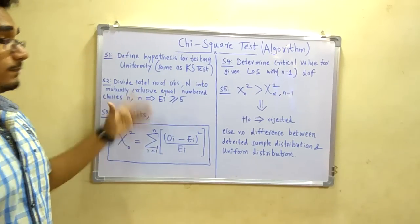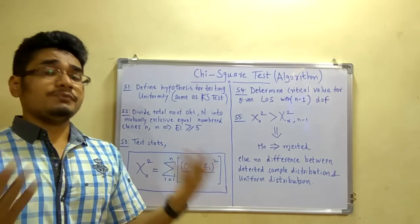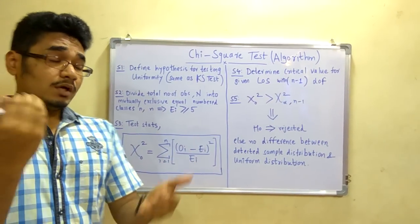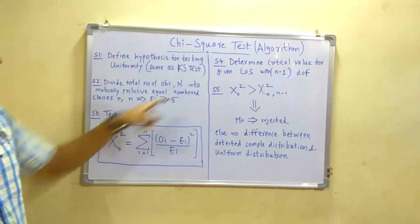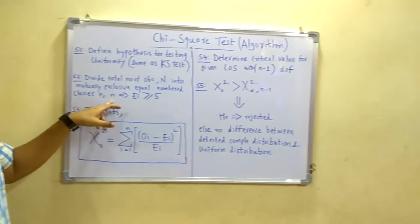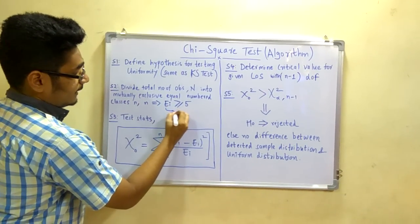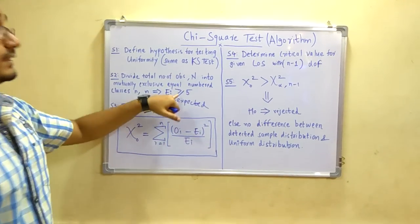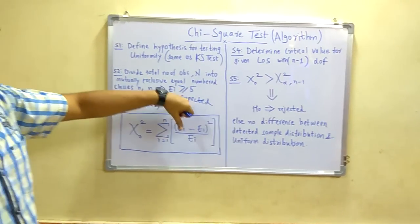Next, you have to divide the total number of observations. In the question they may be given 10, 50, or even 100 observations, so you have to classify them into mutually exclusive number of classes. This small n is the total number of classes. Remember, these are the mutually exclusive classes you will group. You have to choose this n such that ei (the expected frequency) is greater than or equal to 5. This is a default value taken for chi-square test.